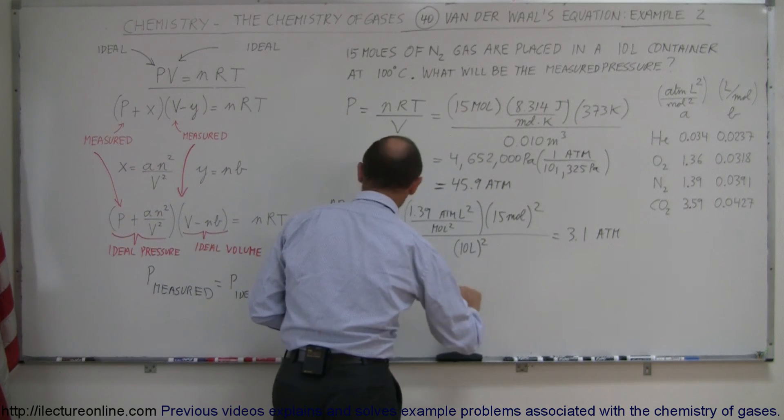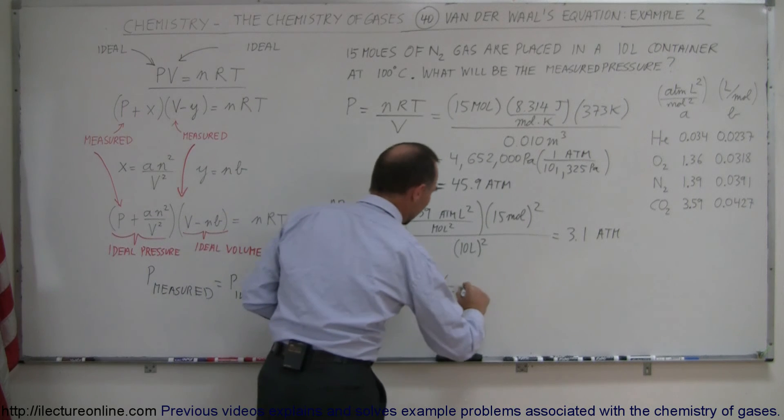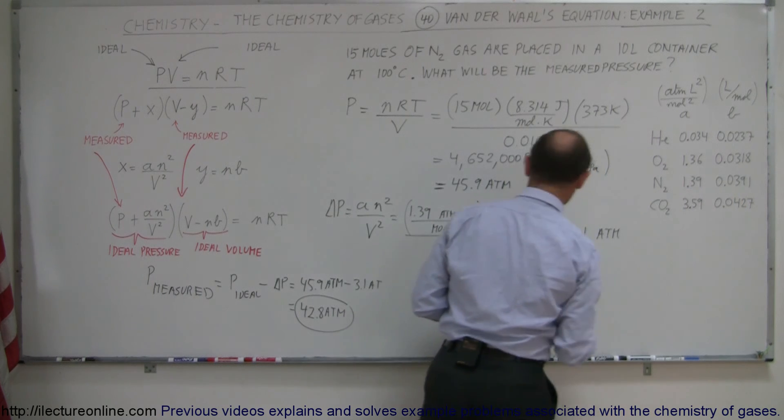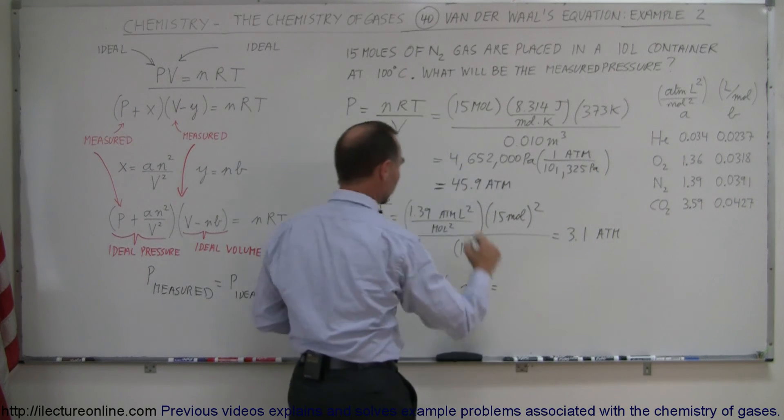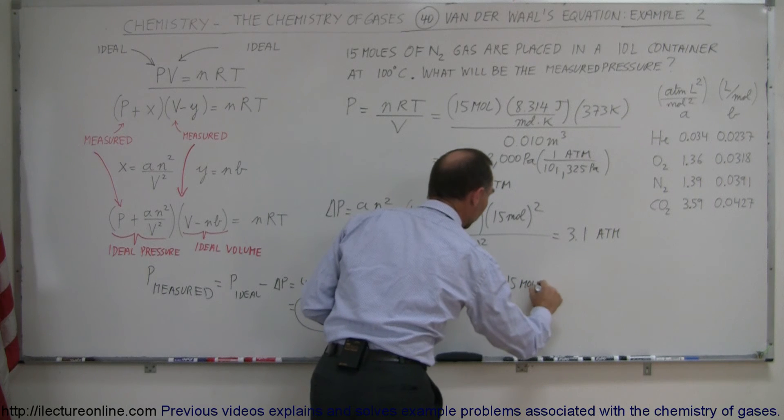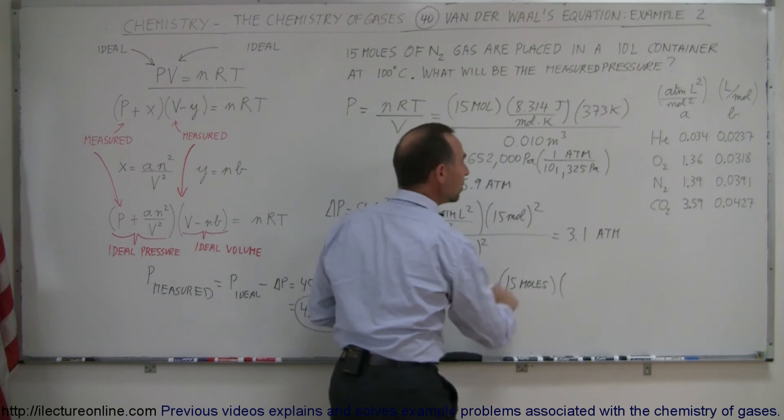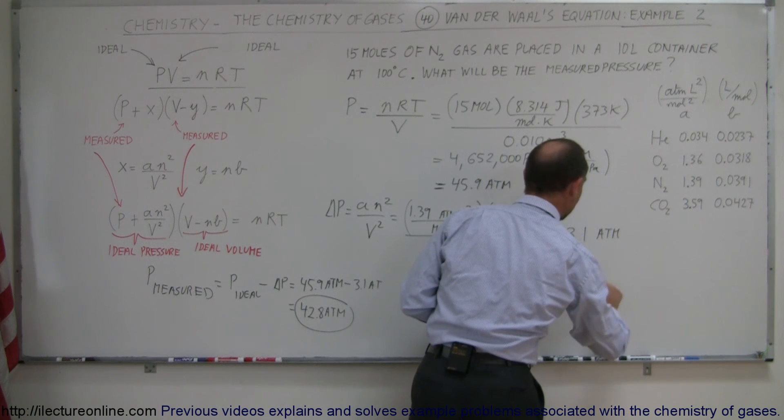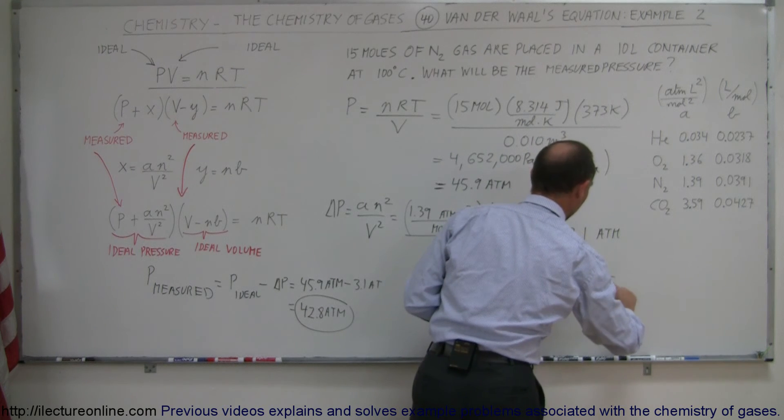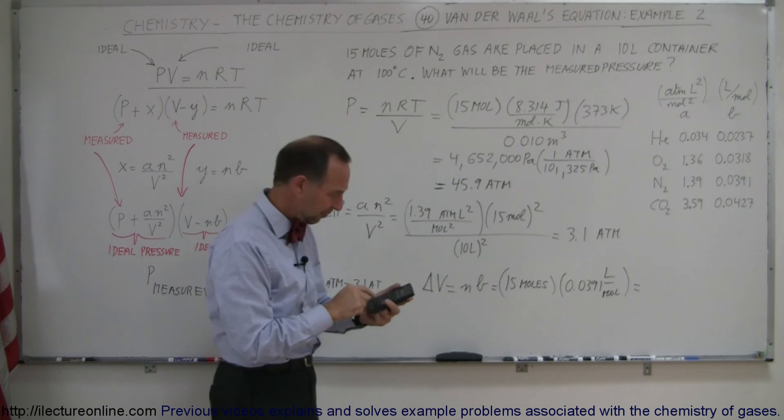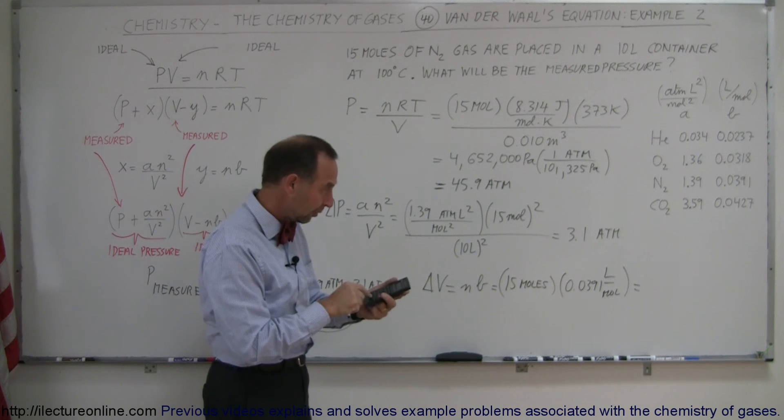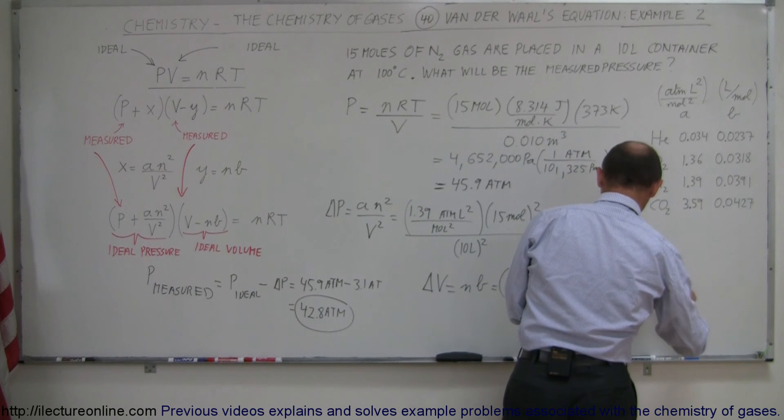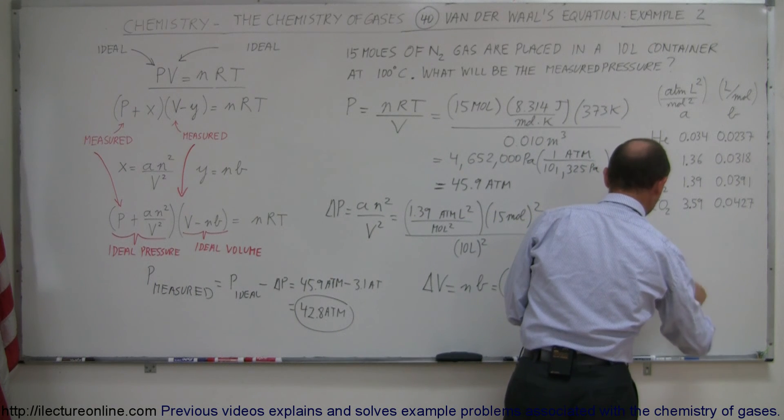So the delta volume is equal to n times b, and b is, of course, this number right here for nitrogen. N is the number of moles, which is 15 moles, so we have 15 moles, and we're going to multiply that times b, which is 0.0391, units are liters per mole. And so we have 15 times 0.0391 equals, and this is equal to 0.59 liters.